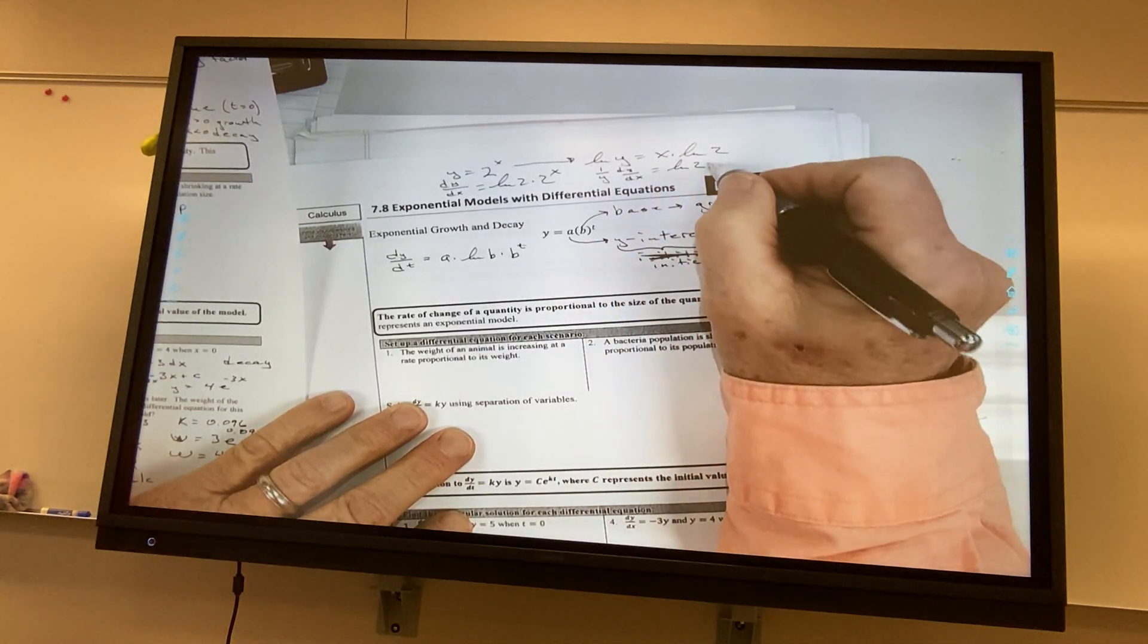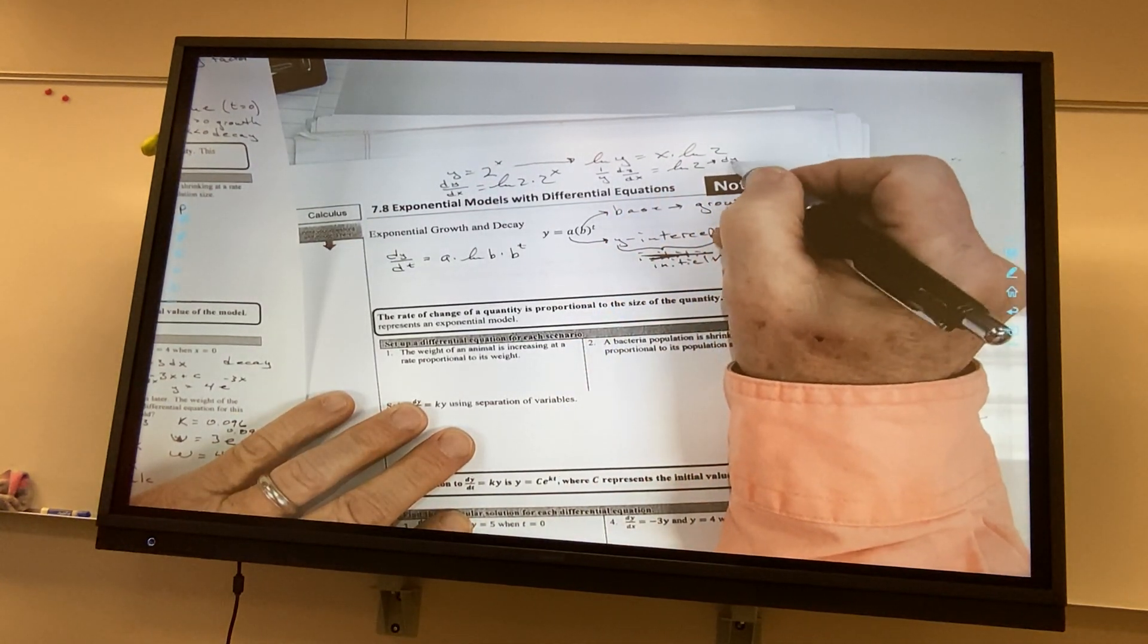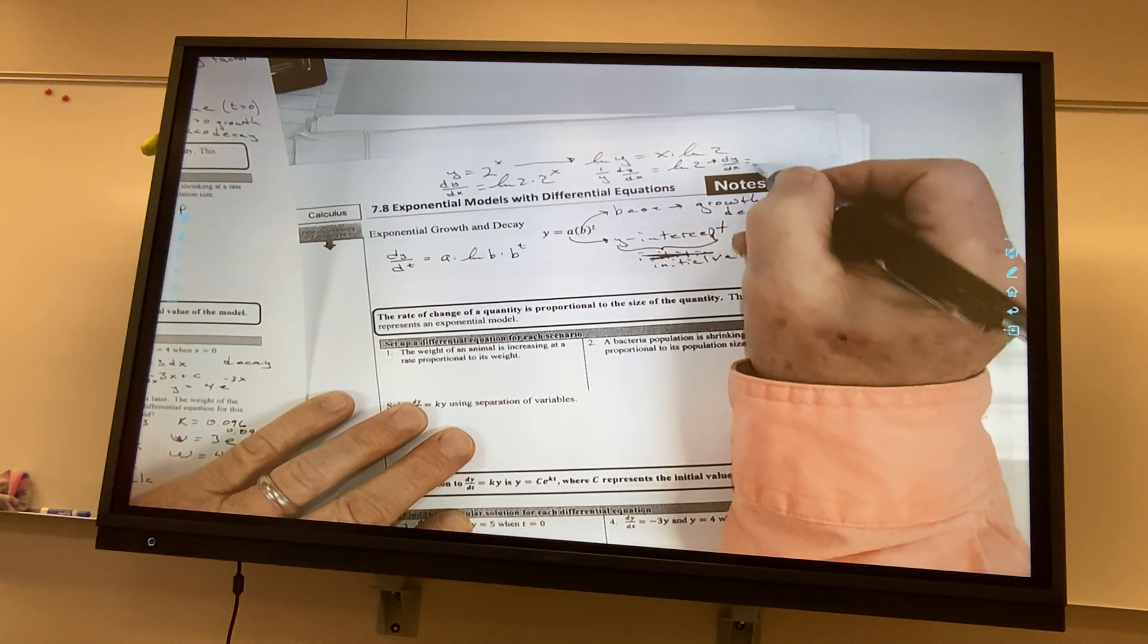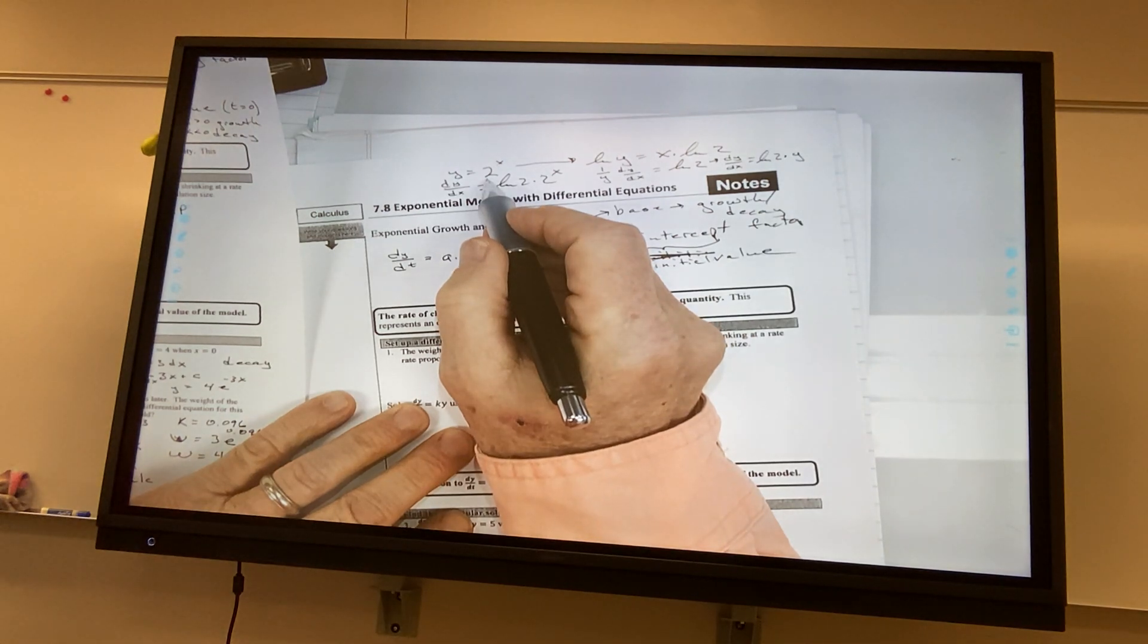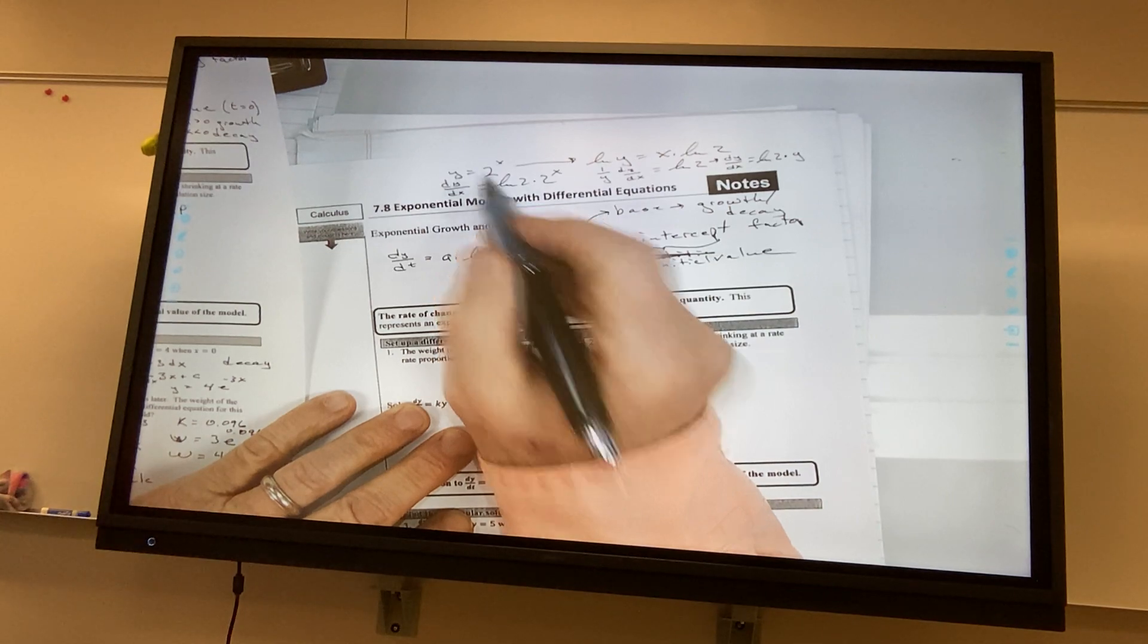So, now if I multiply both sides by y, I get dy over dx is equal to the natural log of 2 times y, but what's y? 2 to the x. Well, that was really fast, but is it making sense? Okay.